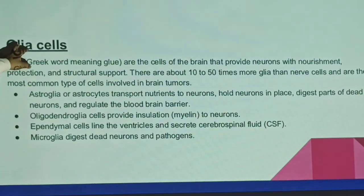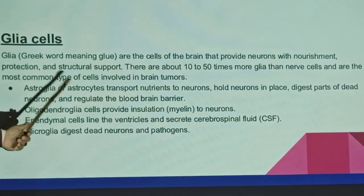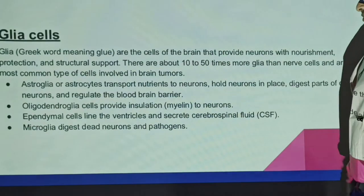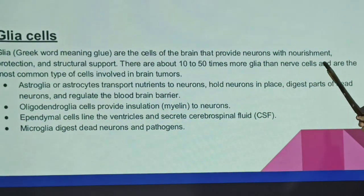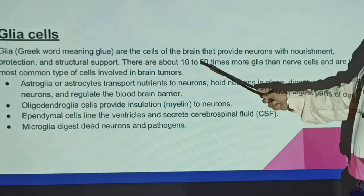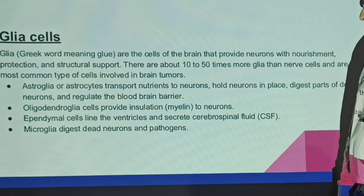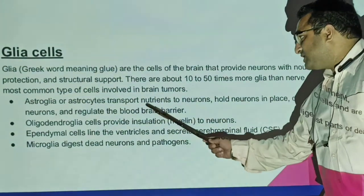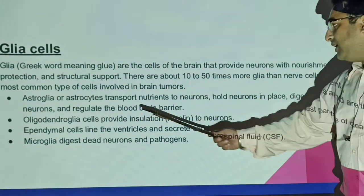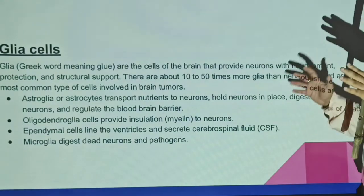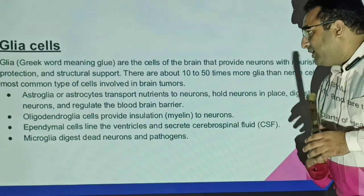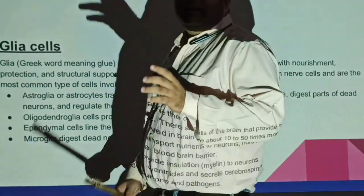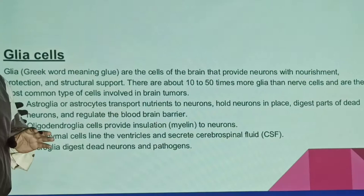The next type of brain cell is glial cells, which provide neurons with nourishment and structural support. There are about 10 to 50 times more glial cells than nerve cells, and they are the most common cells involved in brain tumors. Astrocytes transport nutrients to neurons, digest parts of dead neurons, and help form the blood-brain barrier. Oligodendrocytes provide insulation in the form of myelin, which helps with signal transmission.